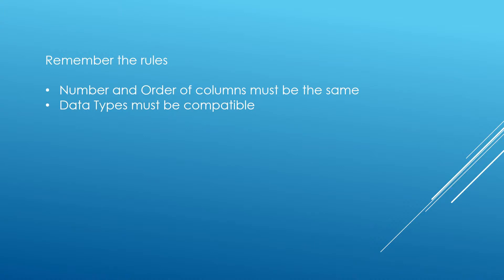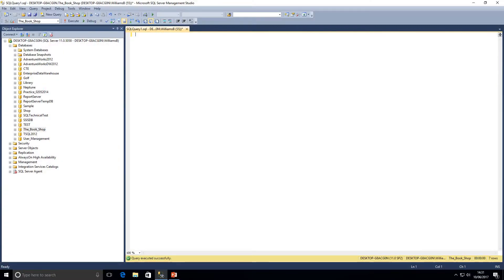Remember the rules — we covered this in the introduction to set operators video. The rules are: the number and order of columns must be the same, and data types must be compatible. So let's jump over to SQL Server Management Studio and go through some examples.